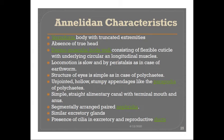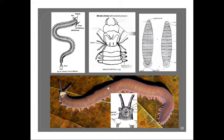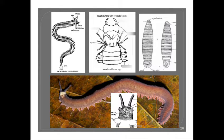Let us see the first annelidan feature found in Peripatus. The first one is the vermiform body with truncated extremities. The vermiform body means a worm-like appearance, which is similar to the worm appearance of the Annelida. For example, the earthworm on the left side and the leech — the sucker present in the leech is similar to the mouth region of the Peripatus. So the vermiform body is one important character which makes Peripatus more similar to the annelids.